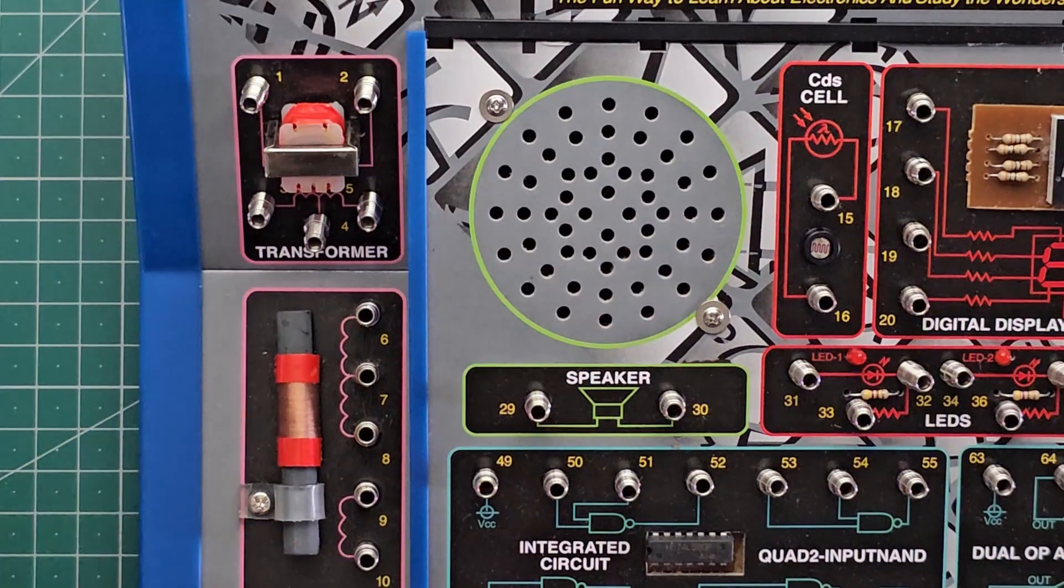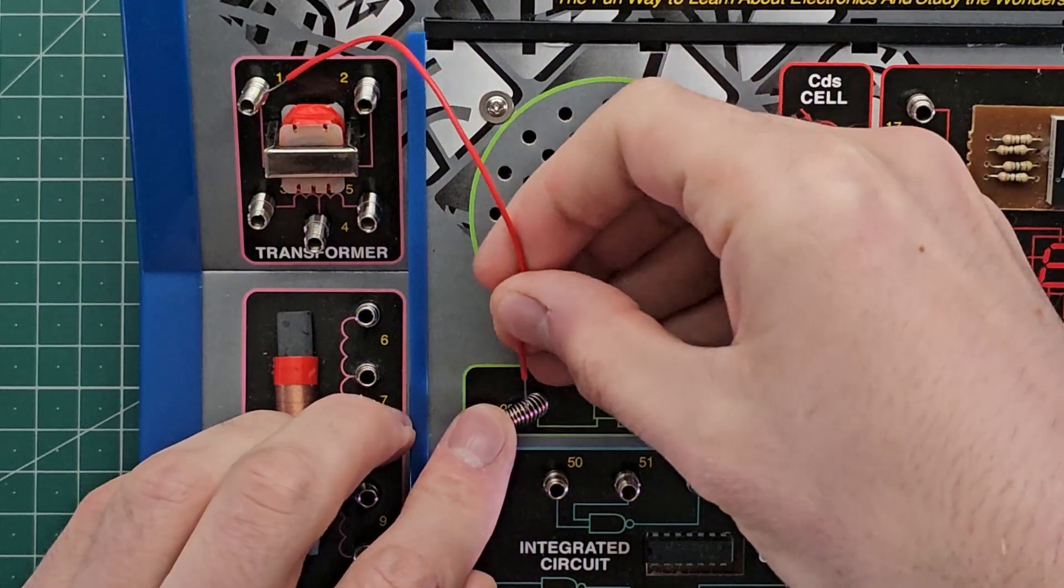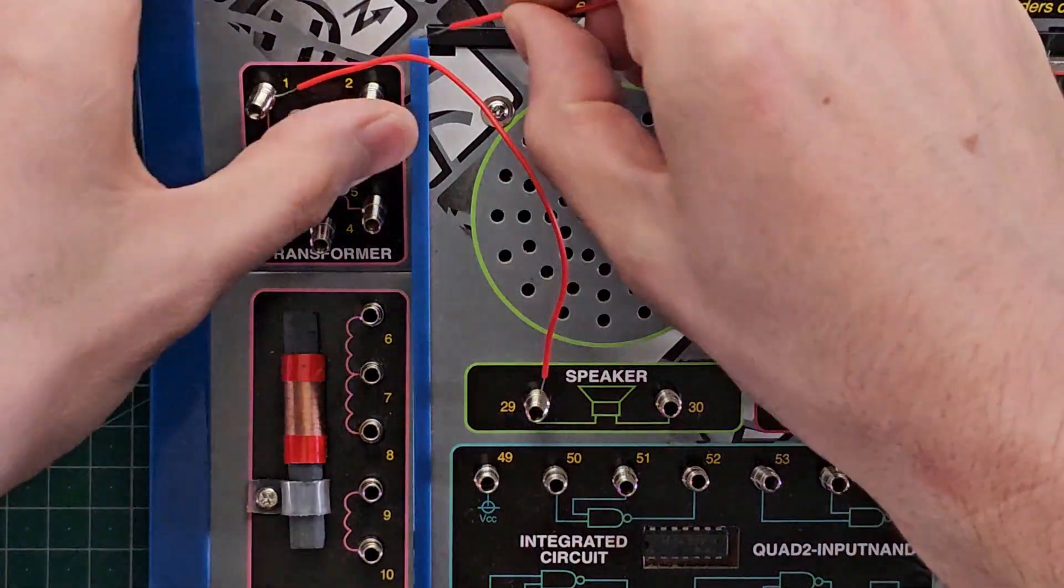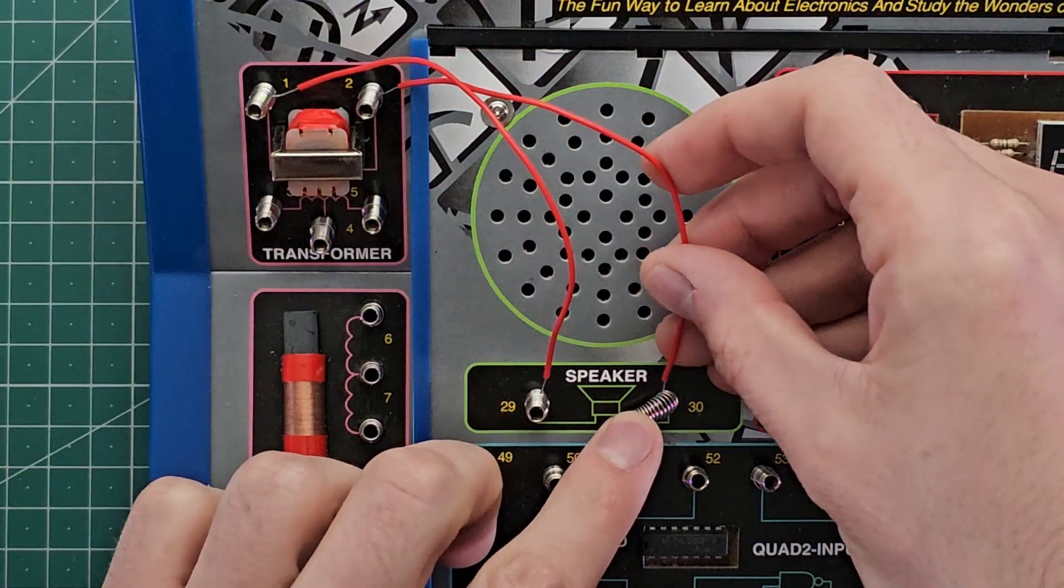So according to our wiring sequence, the first step is to bridge spring 1 to spring 29. And next we'll go spring 2 to spring 30. And for the rest I think I'll just speed it up. Enjoy the time-lapse.